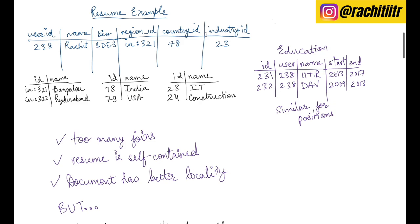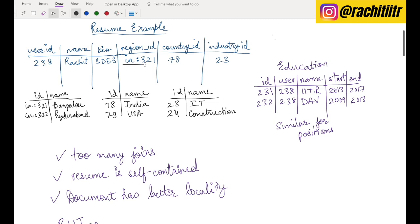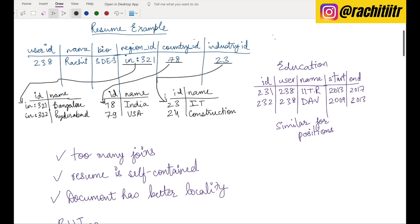How would the backend for storing a resume look? When you talk about relational data models, you will obviously have tables. If you apply normalization, instead of storing the full region information you store a region ID as a foreign key reference to another table — for example, Bangalore or Hyderabad. Similarly, a country ID like 78 references India, and an industry ID like 23 references IT.